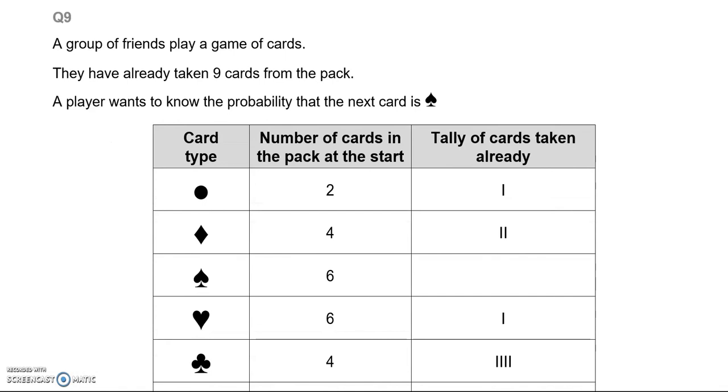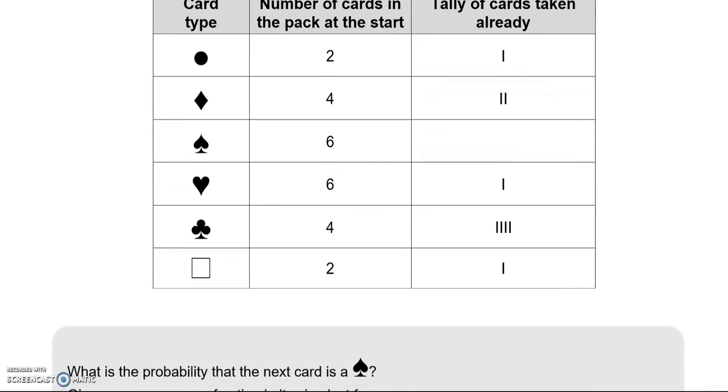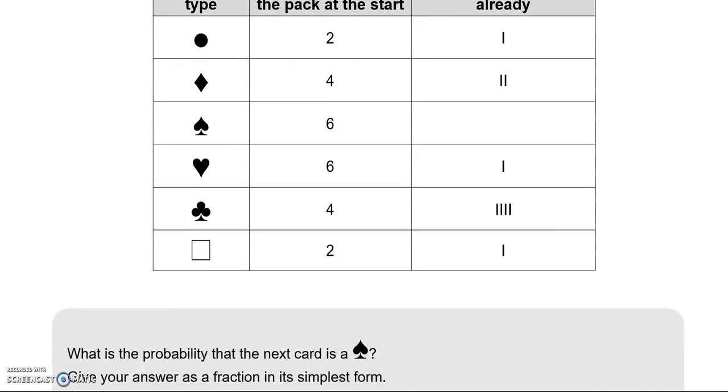Question 9. A group of friends play a game of cards. They have already taken 9 cards from the pack. A player wants to know the probability that the next card is a spade. What is the probability that the next card is a spade? Give your answer as a fraction in its simplest form. So how many of these cards can be a spade? The cards that haven't been drawn already. So none of them has been a spade already. So there could be 6 of them just like we can see from here.